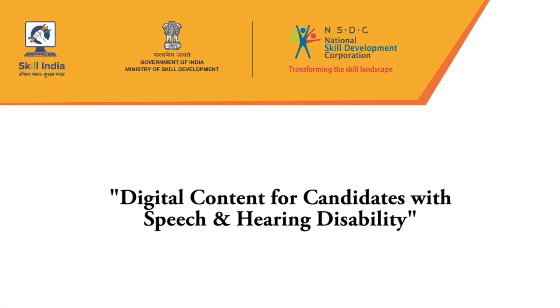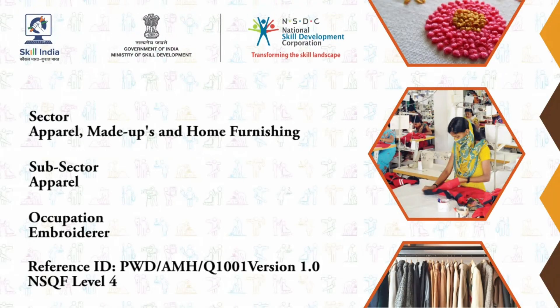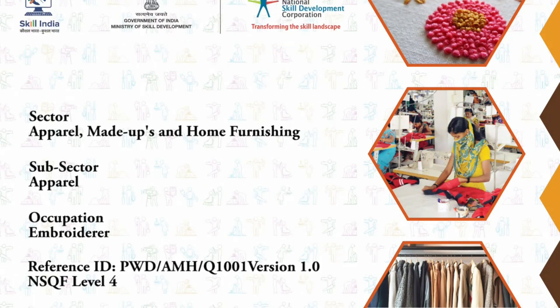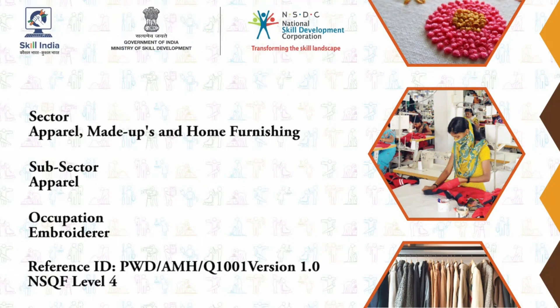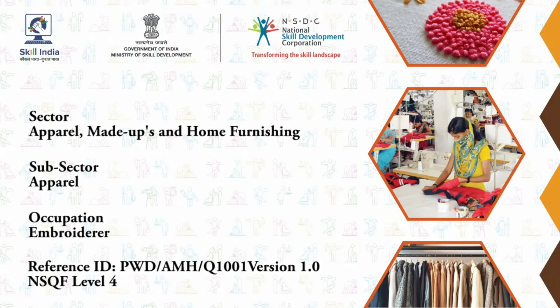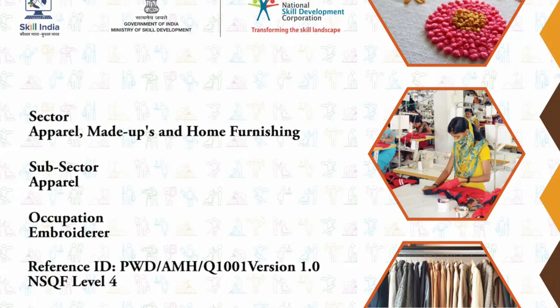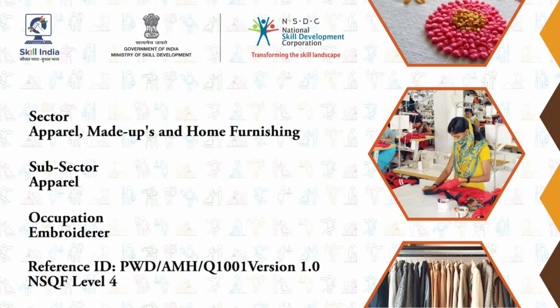Digital content for candidates with speech and hearing disability. Sector: Apparel, Made Ups and Home Furnishing. Subsector: Apparel. Occupation: Embroiderer. Reference ID: PWD AMH Q1001. Version 1.0. NSQF Level 4.